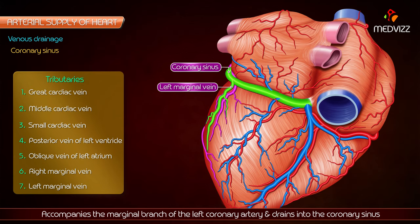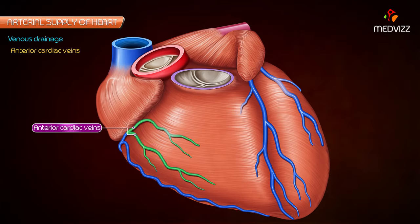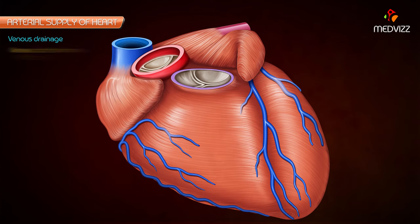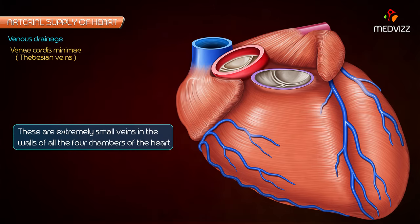Anterior cardiac veins are a series of small veins which run parallel to each other across the surface of the right ventricle to open into the right atrium. Venae cordis minimae — also known as the Thebesian veins — are extremely small veins in the walls of all four chambers of the heart.